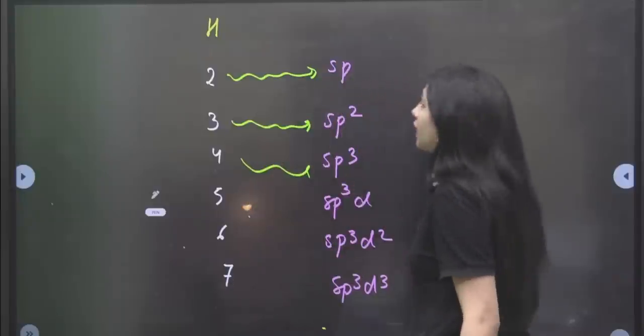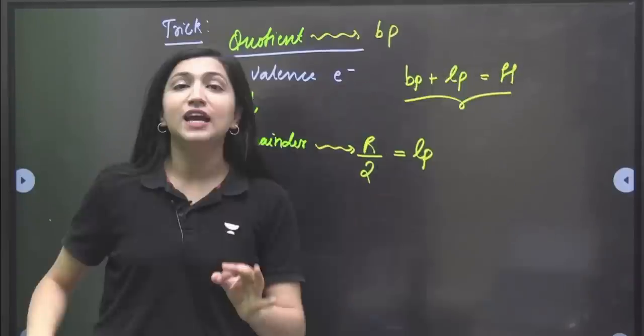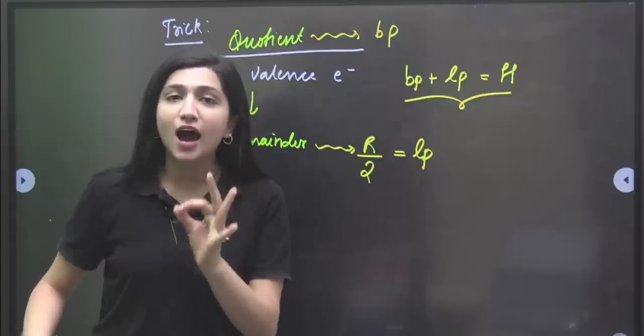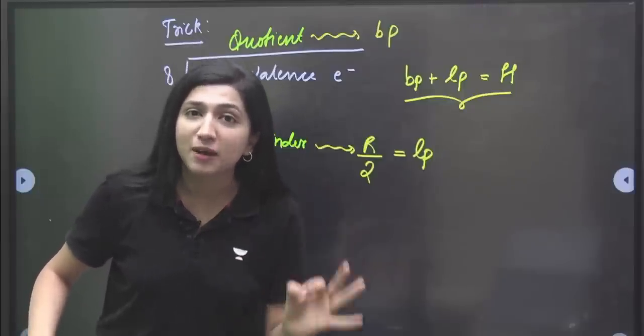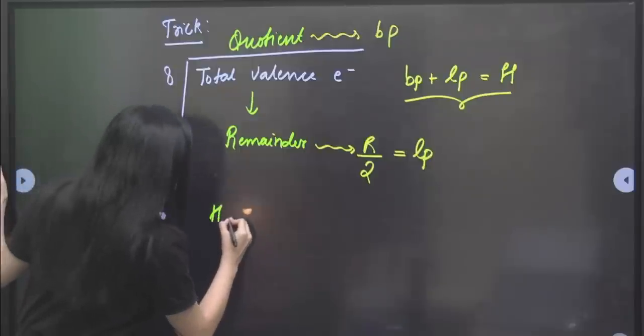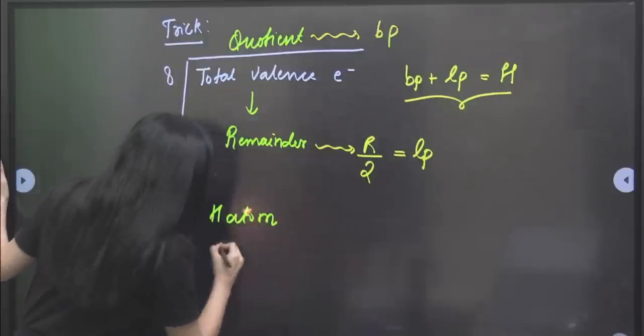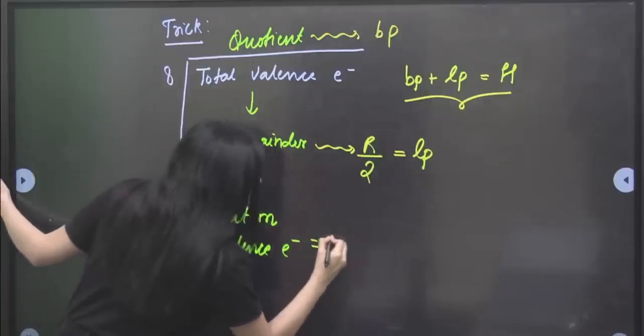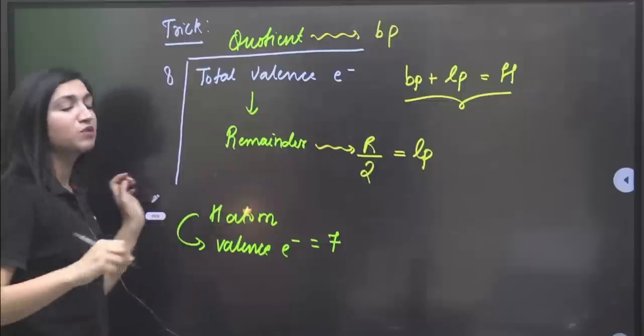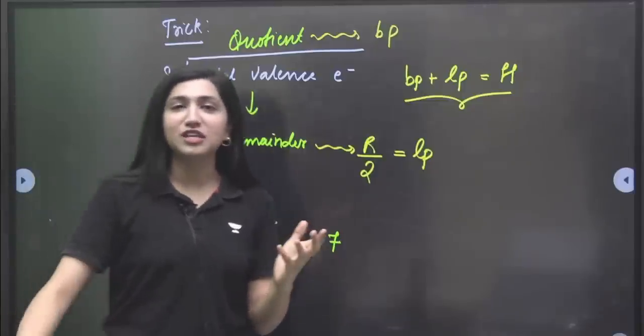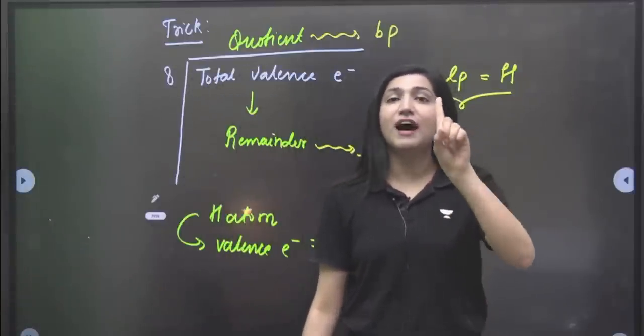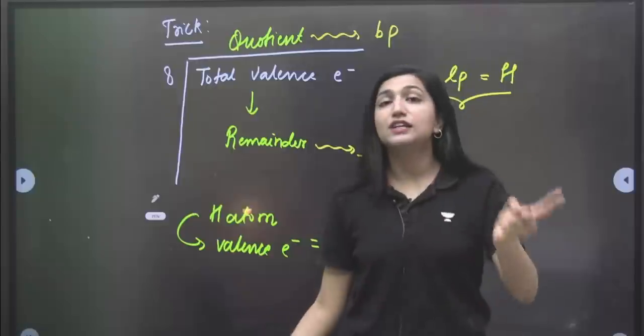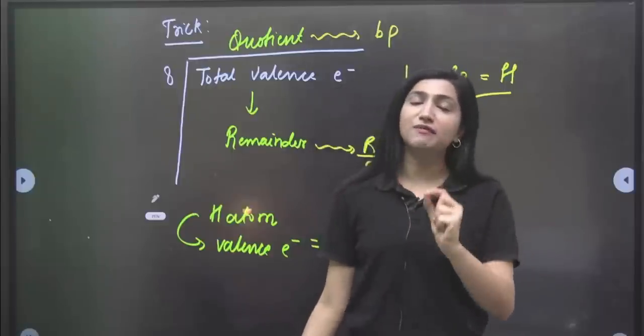But before that, we will focus on a very important point. If there is a hydrogen atom given in your molecule, listen to this: for hydrogen atom, you will always consider 7 valence electrons. We all know that hydrogen has only one valence electron. But this trick is only valid when you consider 7 valence electrons for hydrogen.